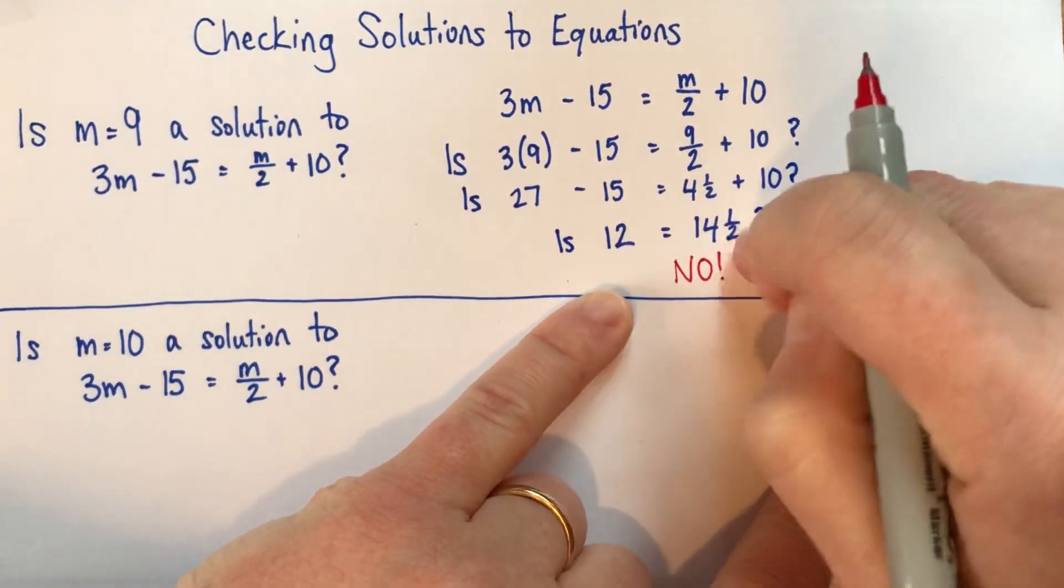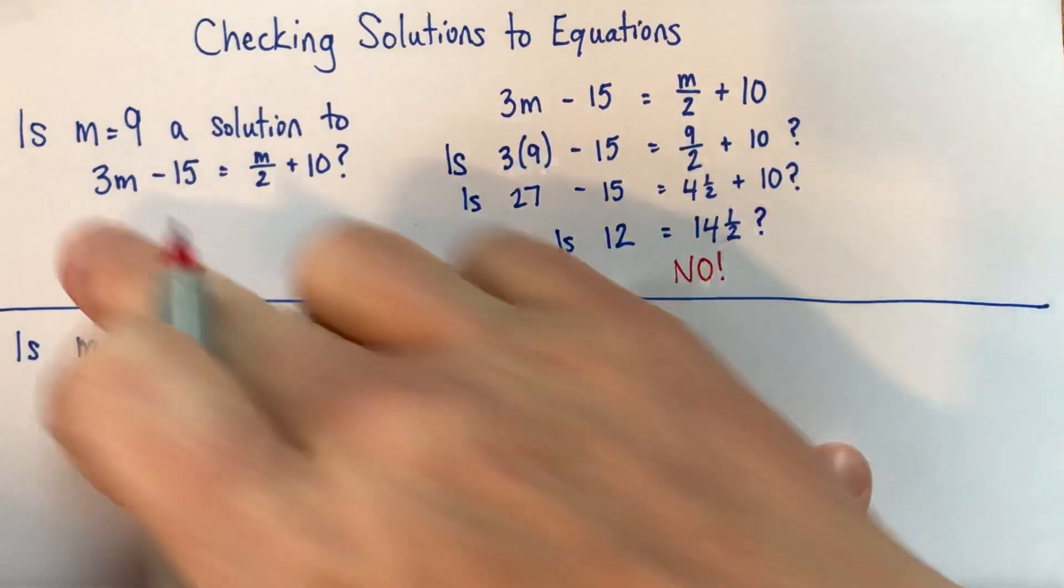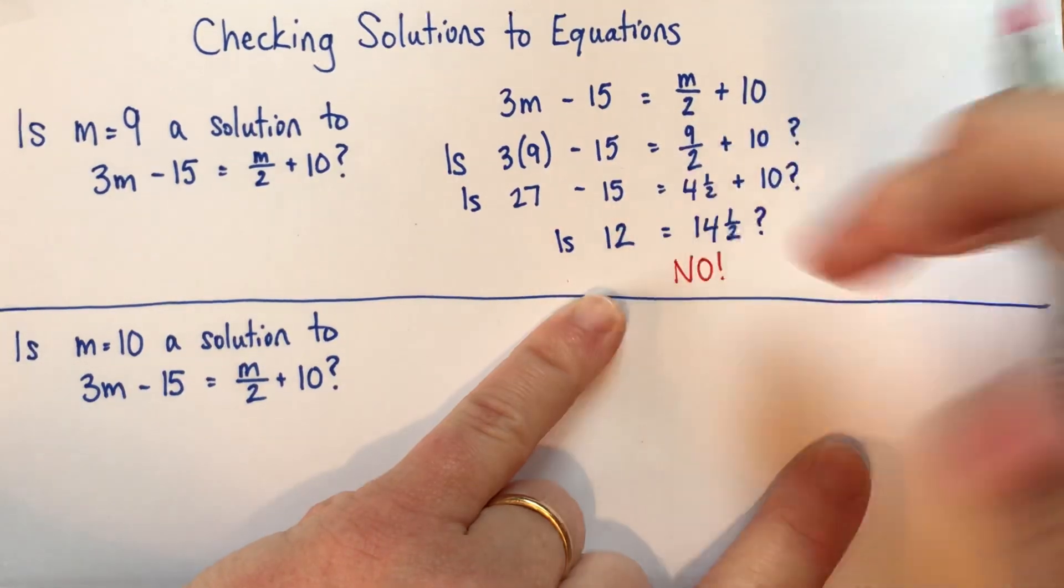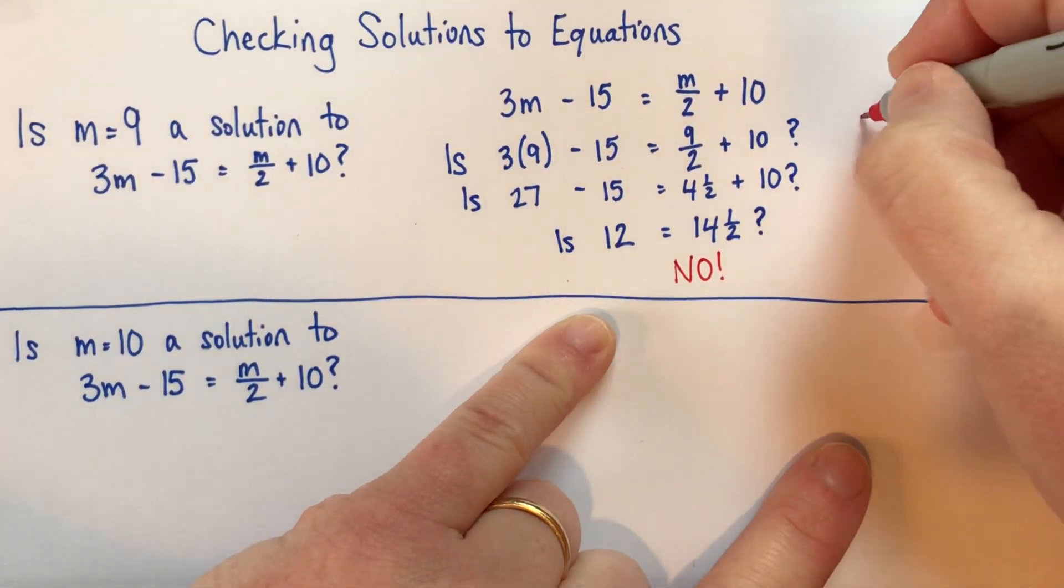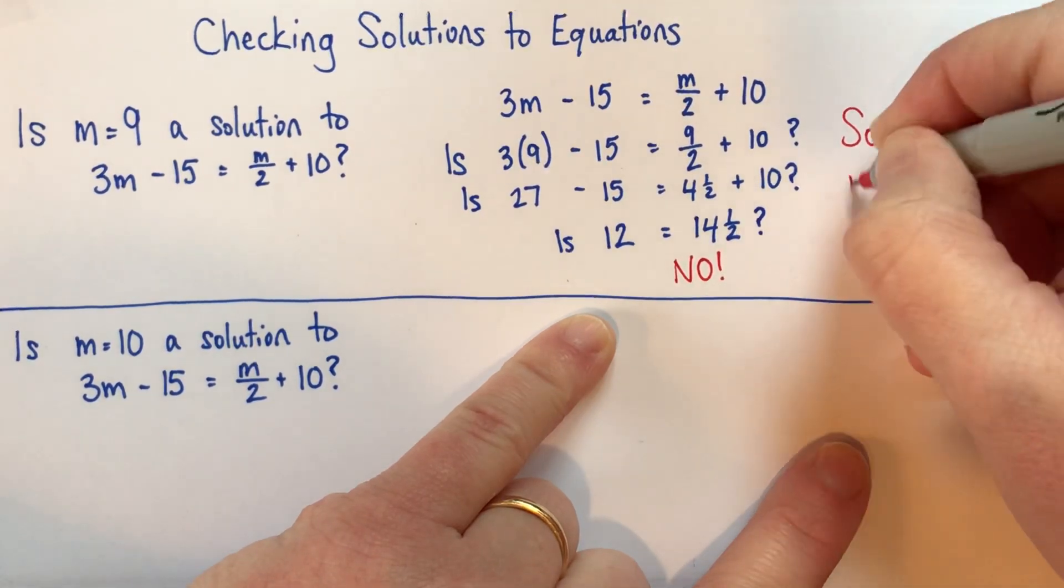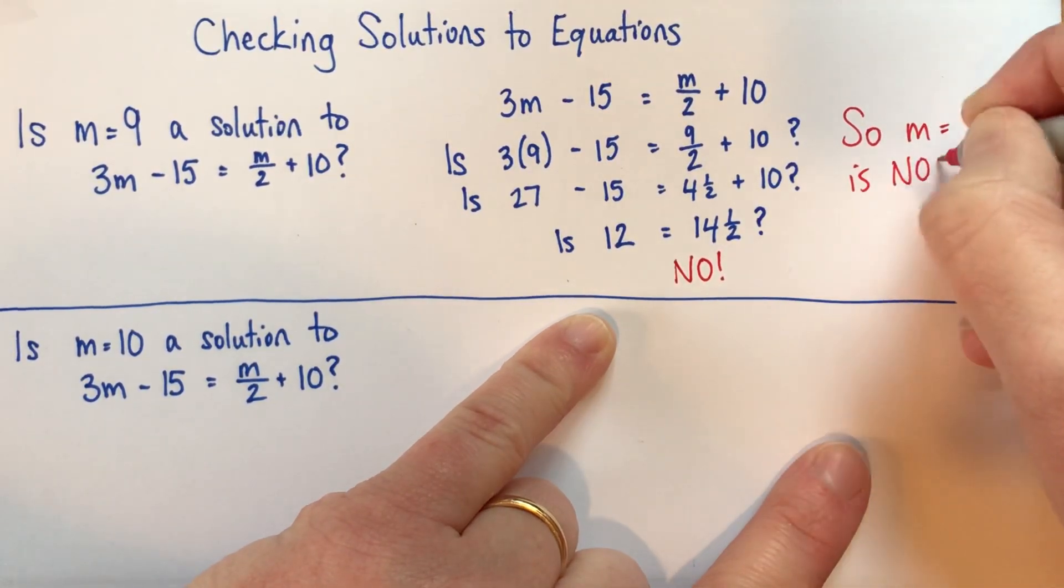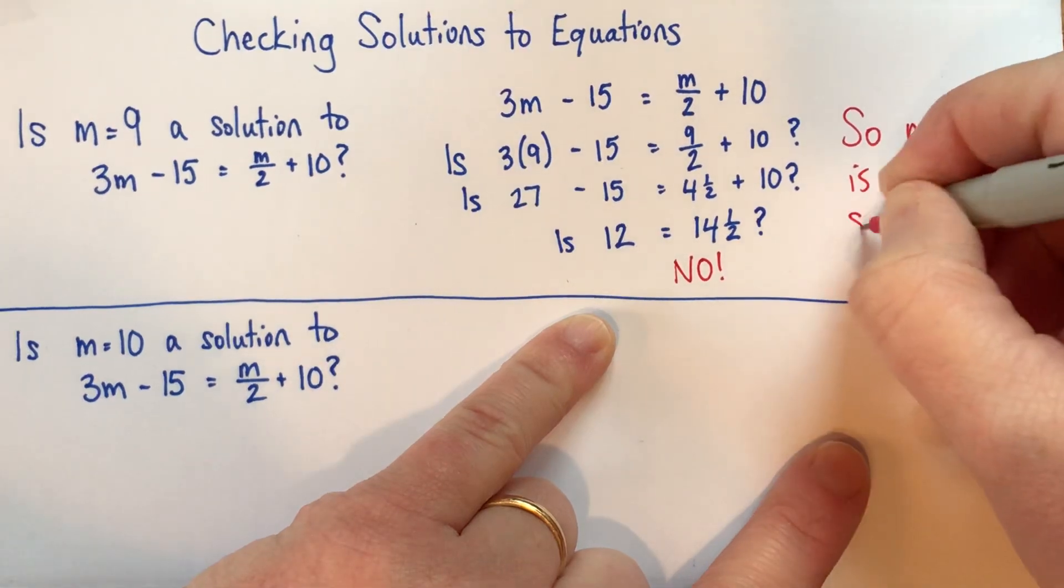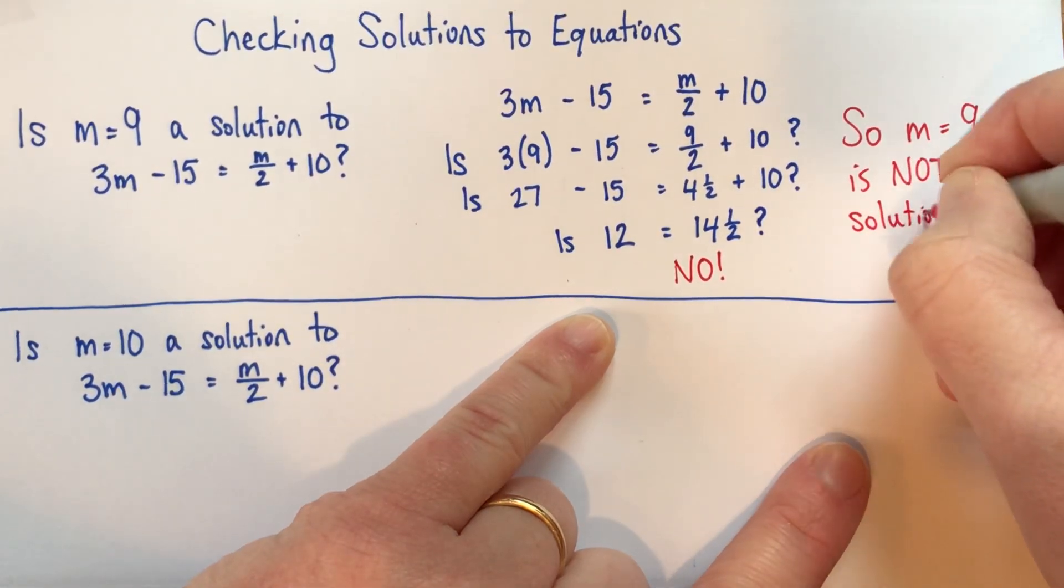So what this tells us, when we substituted m equals 9, we got that the equation wasn't true, or that the two sides were not the same. So m equals 9 is not a solution to the equation.